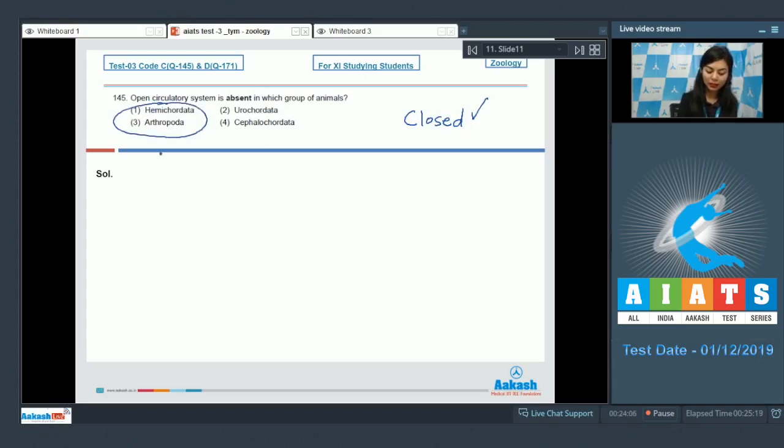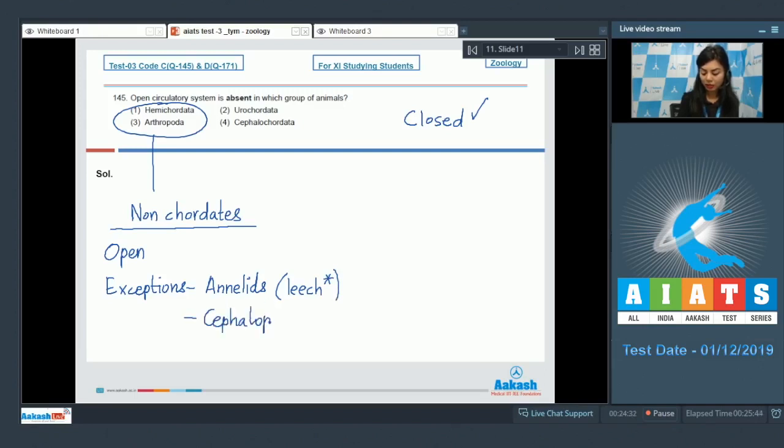Option number 1 and 3 are non-chordates. And we know in non-chordates, generally we have open circulatory system. There are a few exceptions. They are annelids except for leech, and cephalopods. They have closed circulatory system.